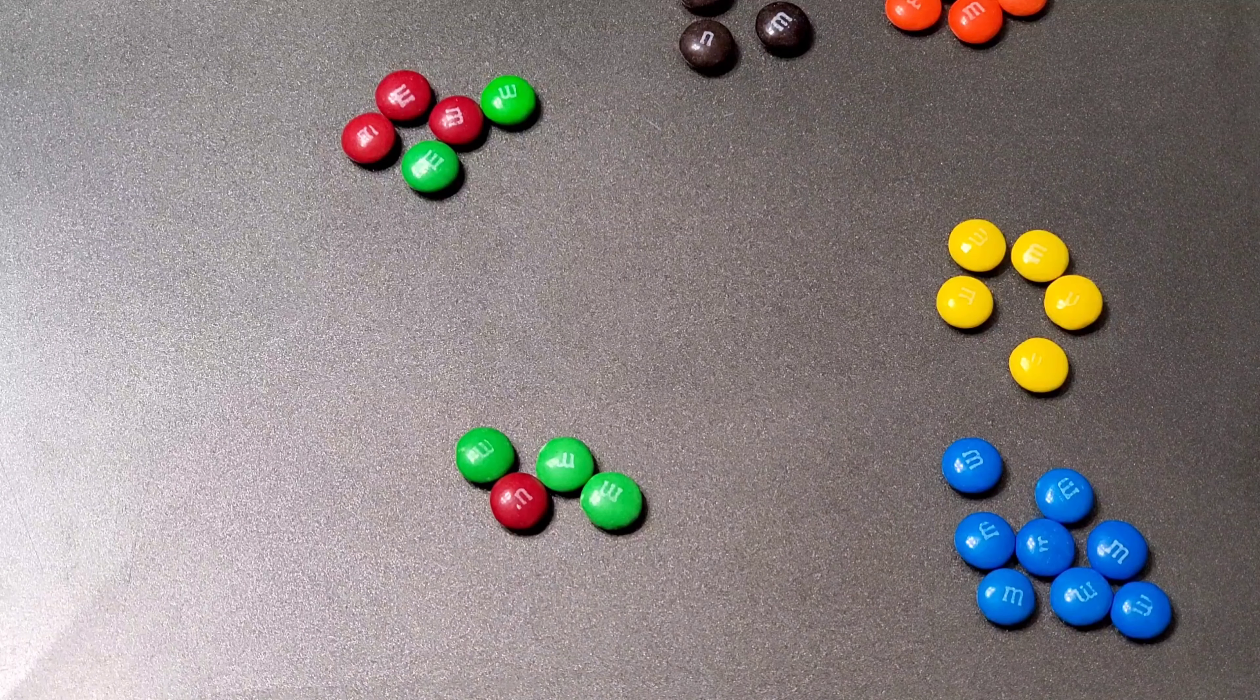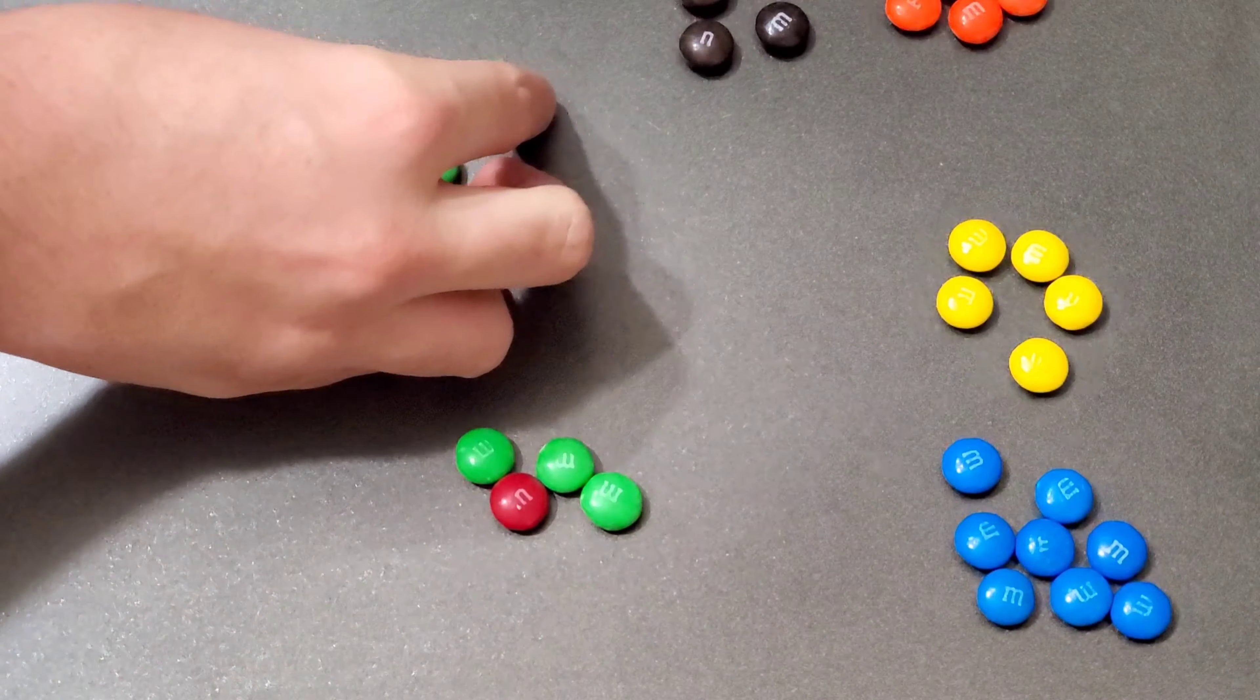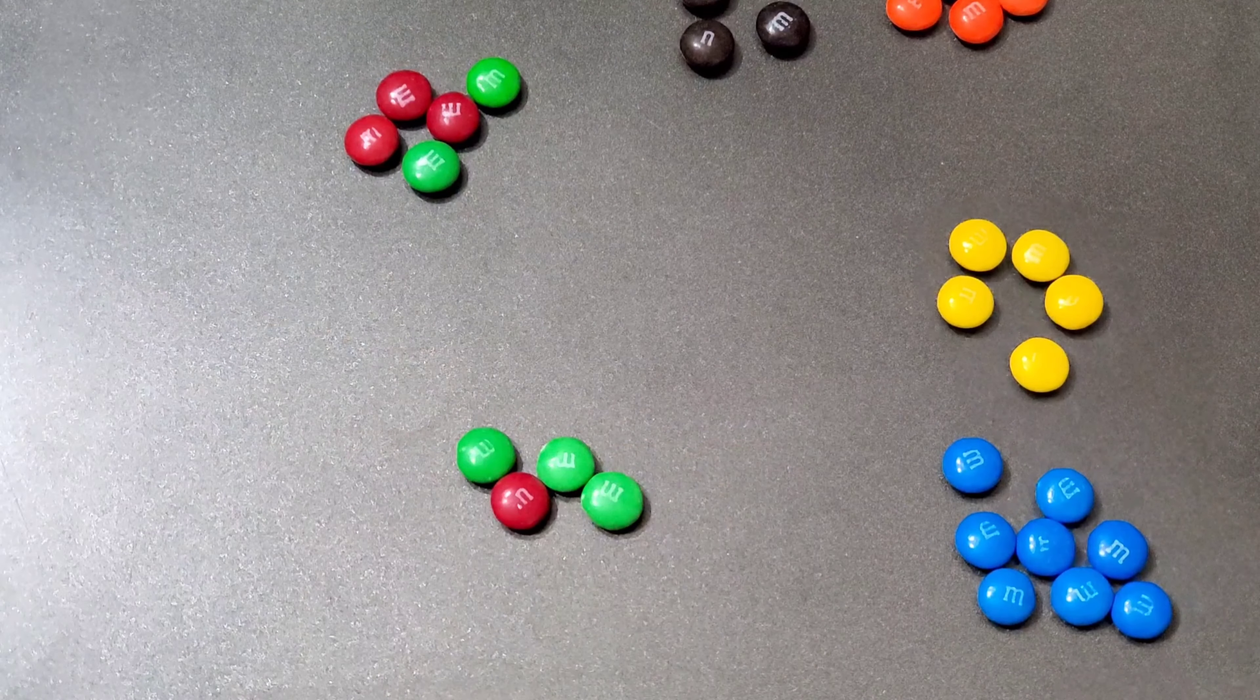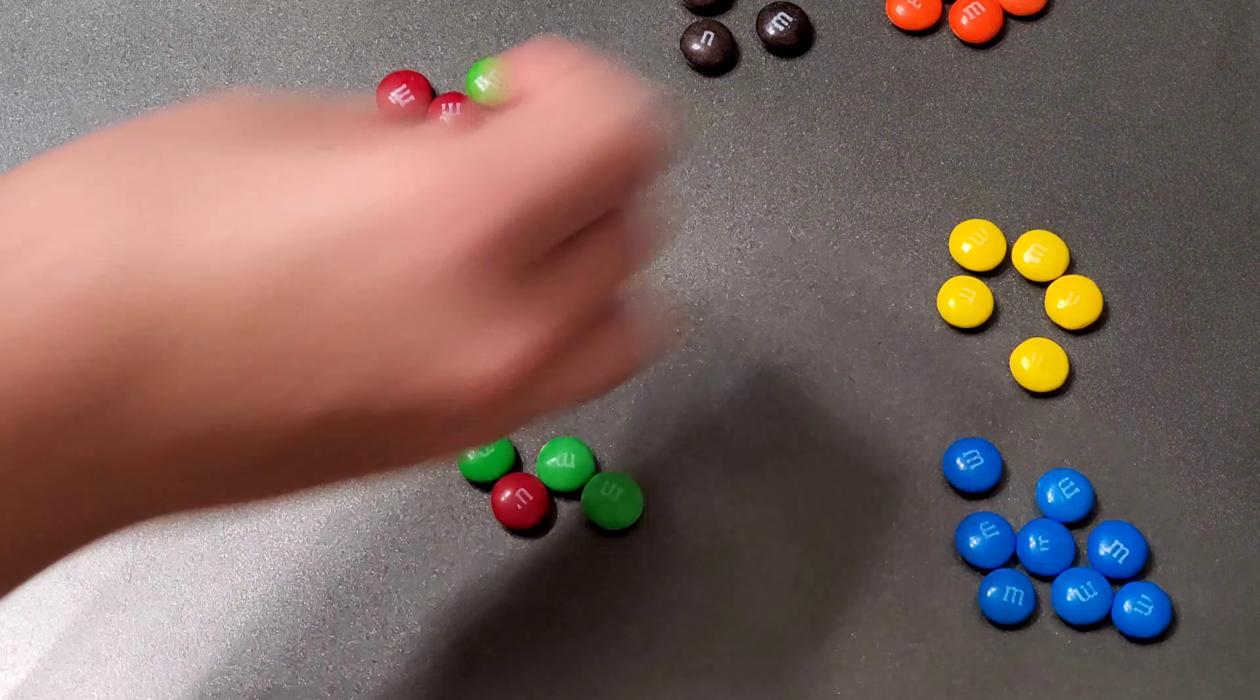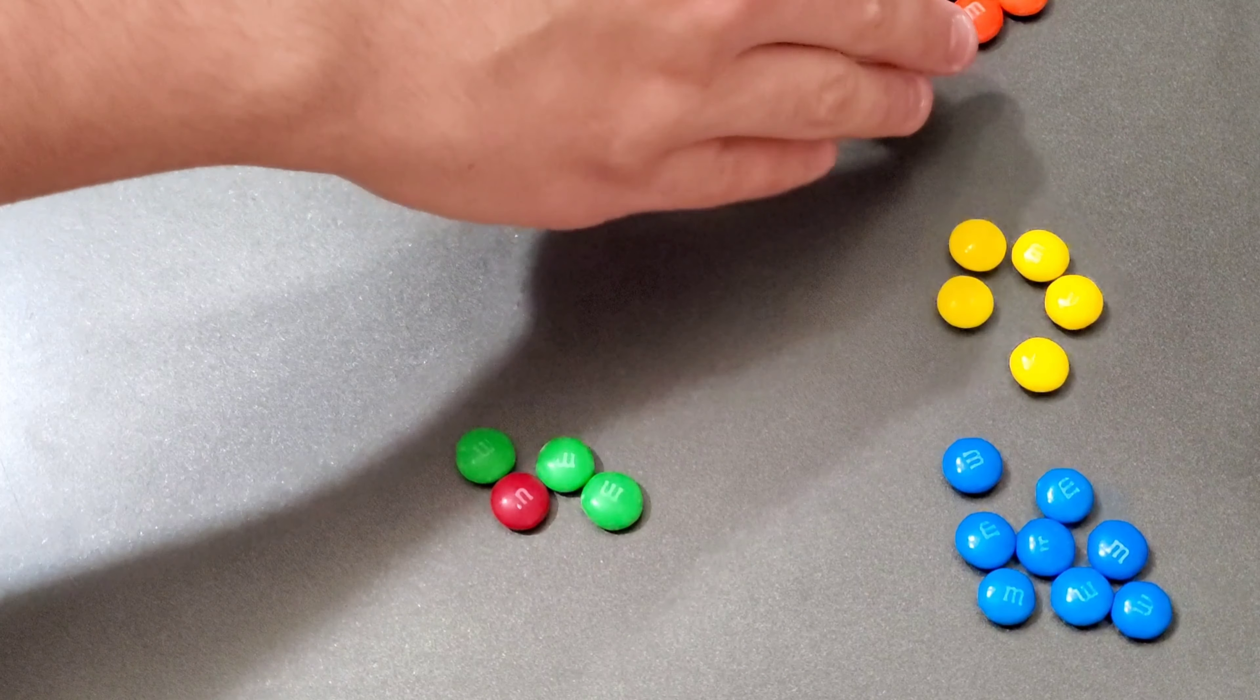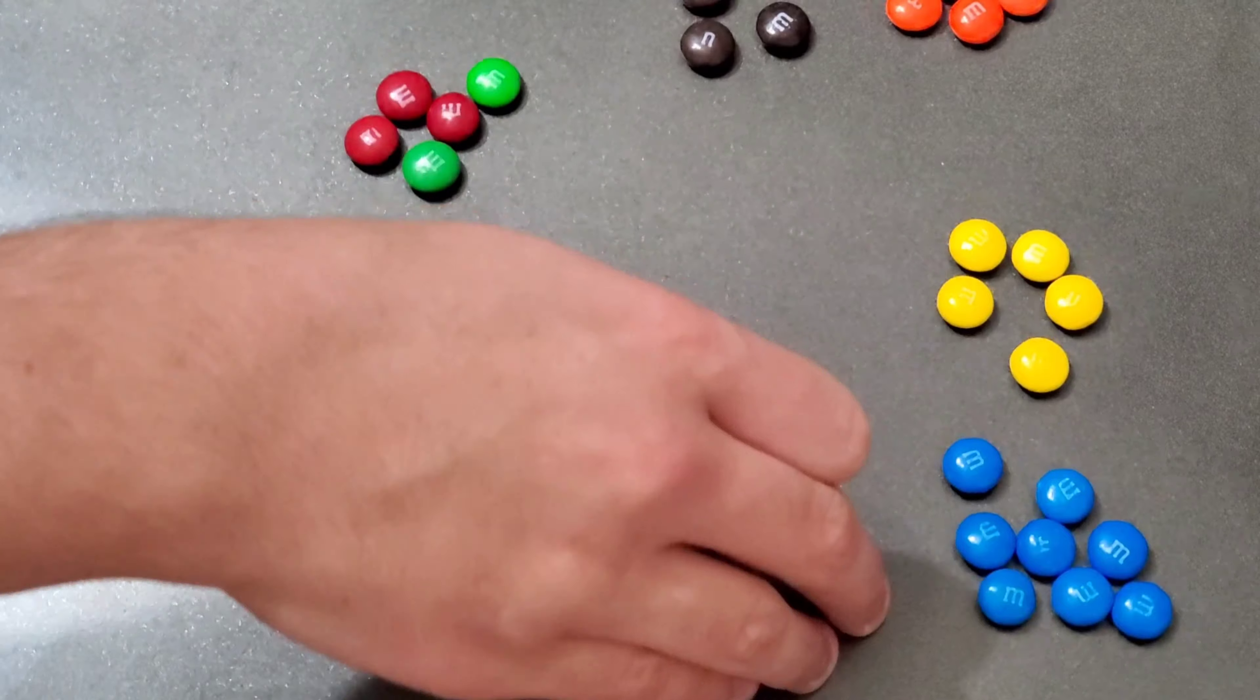So this is what I sorted. So I have five red and four green. And here are the blacks, M&Ms. Here are the orange, the yellow, and the blue.